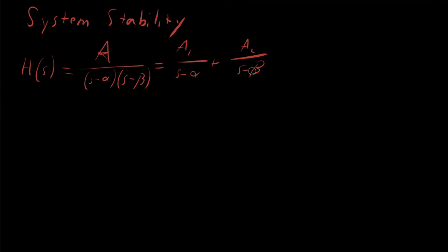And for what values of the poles alpha and beta is the system stable, and how does that shift and determine what the poles are?